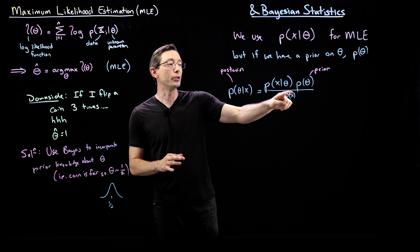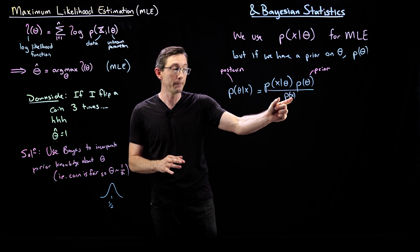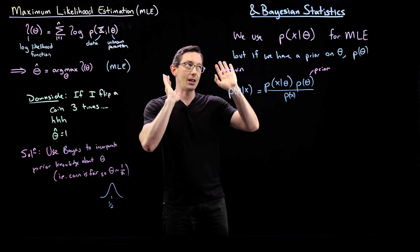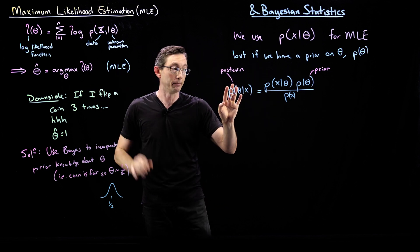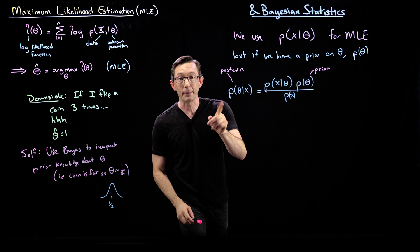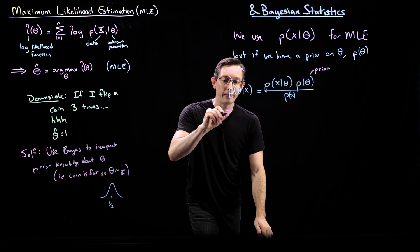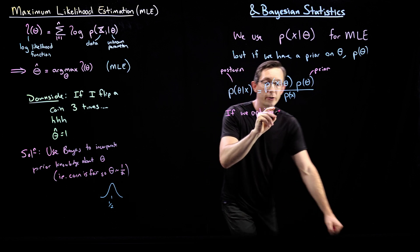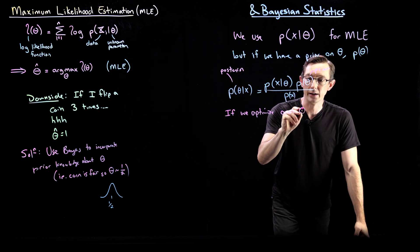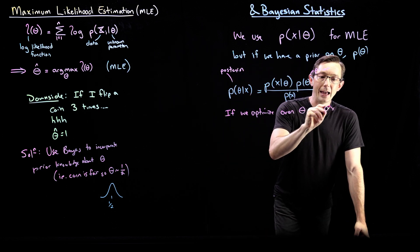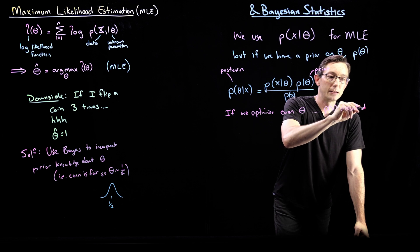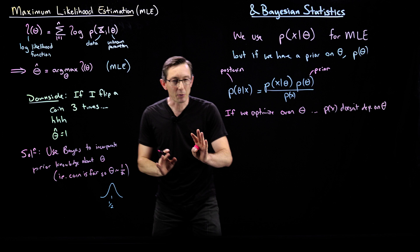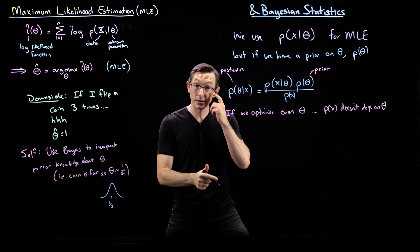But we don't always know the probability of X. We don't always have this quantity here. So the useful thing, the thing that makes this nice for optimization is if we're optimizing over theta. If we optimize over theta, which is what we're trying to do, P(x) doesn't depend on theta.